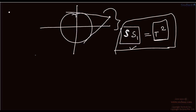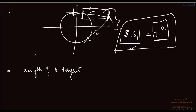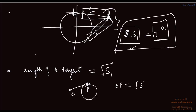You can then separate the pair of tangents to get two individual tangents. The next point is the length of a tangent. The length of a tangent equals root of S1. If you are given a point and a circle, then the length of the tangent from that point will be equal to root S1 — that is, you put the point into the circle equation and take the square root. That gives you the length of the tangent.